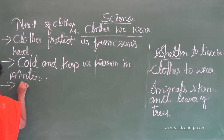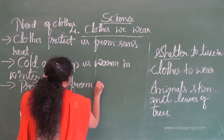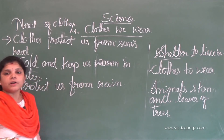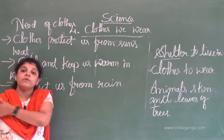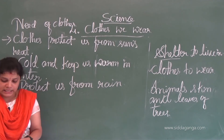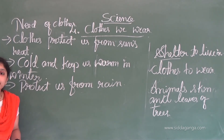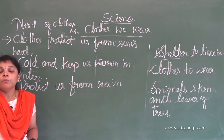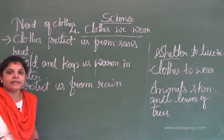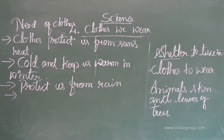Third point: clothes protect us from rain. We wear raincoats in the rainy season to protect us from rain. Rain coats and shoes made of waterproof materials keep us dry when we go out in the rain. We wear raincoats and waterproof boots to protect us from rain and rain-caused diseases.